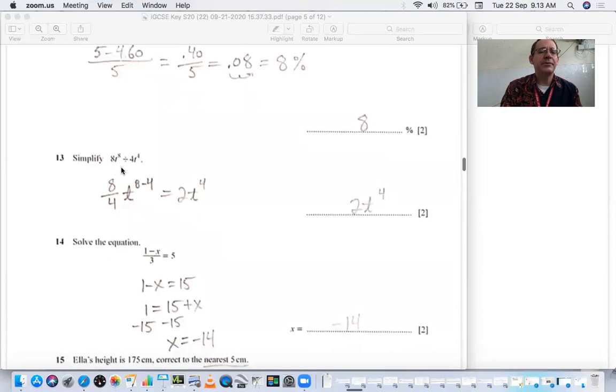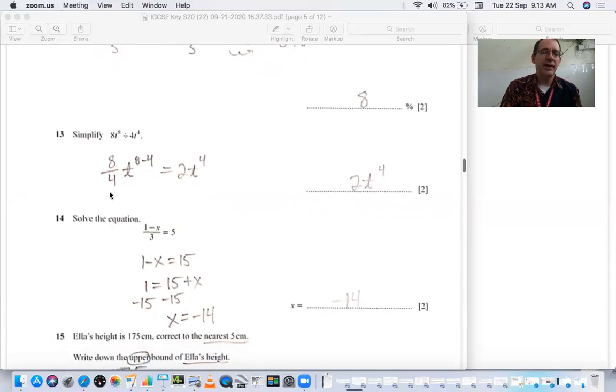Number 13, simplify 8t to the 8 divided by 4t to the 4th. With the coefficients, you just divide. With the exponent, you subtract. When you divide bases, you subtract exponents. So 8 divided by 4 is 2. And 8 minus 4 is 4. So 2t to the 4th.